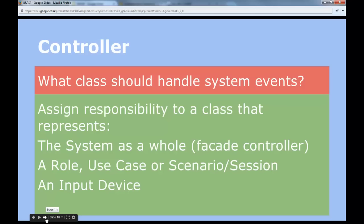We can assign this responsibility to a class that represents the system as a whole — a facade controller — or to a class representing a role in the system, which is what we did by adding a player in the controller package. Or we could name it as a use case like play game, or divide it further into a scenario or session. This mapping of a requirement to a class in the controller is nice because when a bug crops up, we can ask what kind of user action was being performed and find it in the design and implementation.